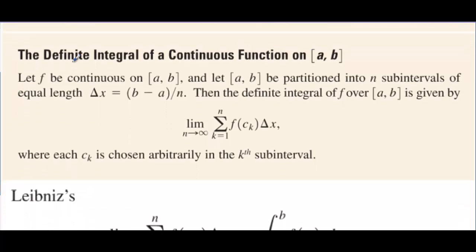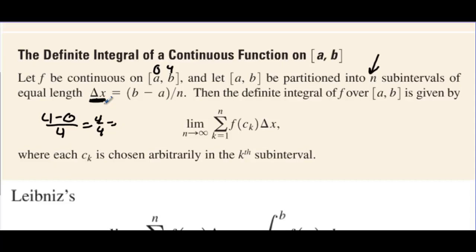The definite integral of a continuous function on ab: let f be continuous on ab and let ab be partitioned into n sub-intervals of equal length. So the bases are all exactly the same. If you're going from zero to four, the change in x — the length of the base — will be four minus zero over the number of rectangles. With four rectangles, that's one. The limit as n approaches infinity gives us more and more rectangles. You find the area, height times base, by summing all the areas, where each c sub k is chosen arbitrarily in the k-th sub-interval.